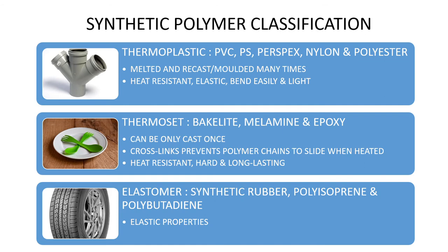In contrast, thermoset is a plastic which can only be cast once upon heating. Therefore, thermosets are harder, heat resistant, and long-lasting. Examples of thermosets are Bakelite, melamine, and epoxy. The third type is elastomers, which have elastic properties like rubber. Synthetic rubbers, polyisoprene, and polybutadiene are examples of elastomers.